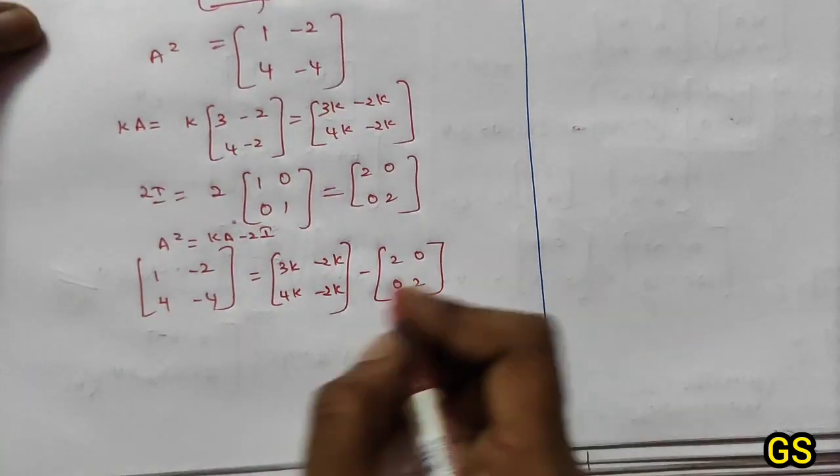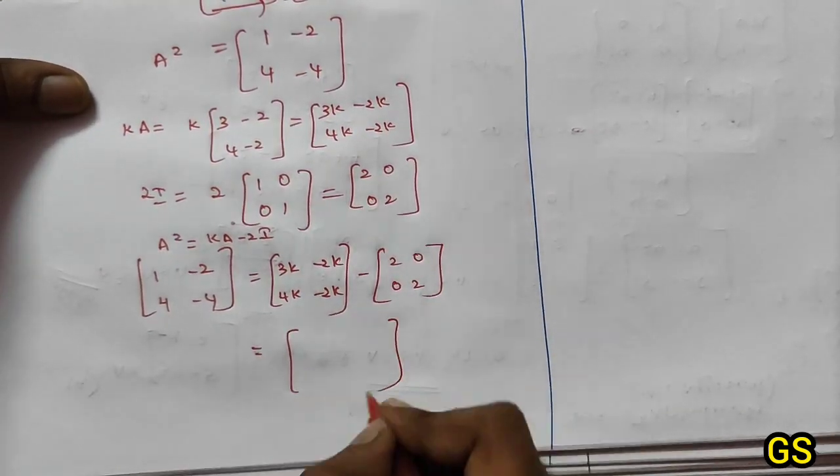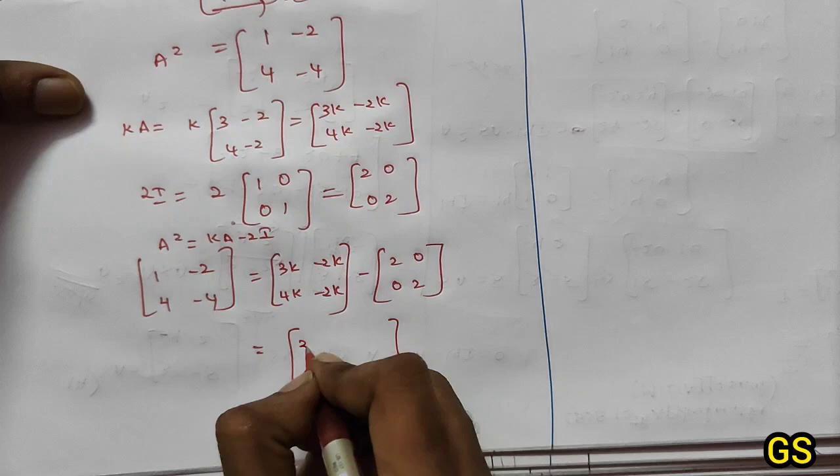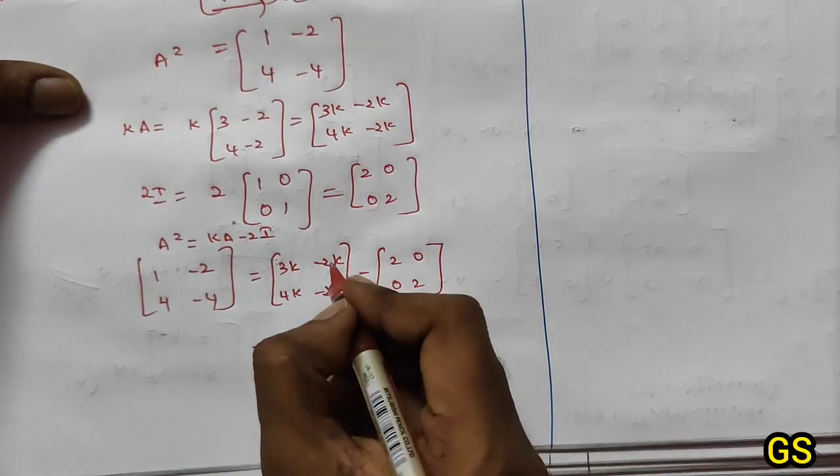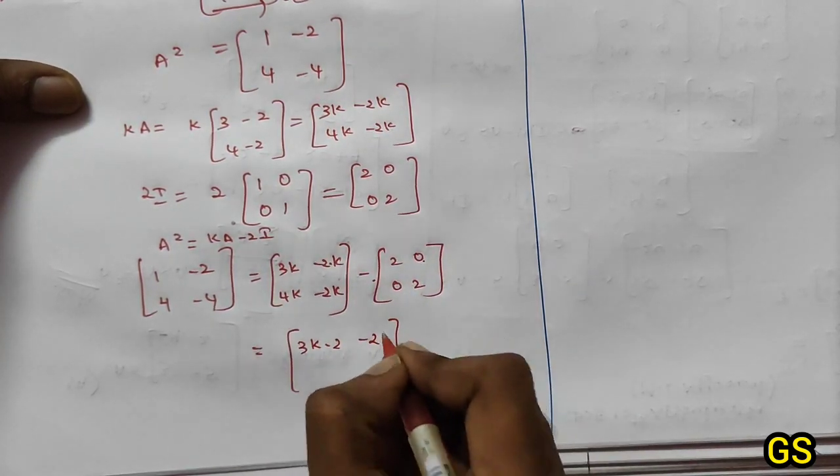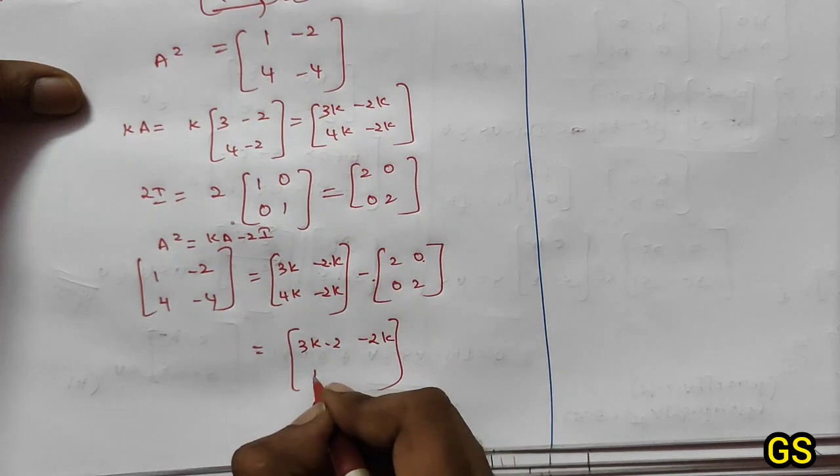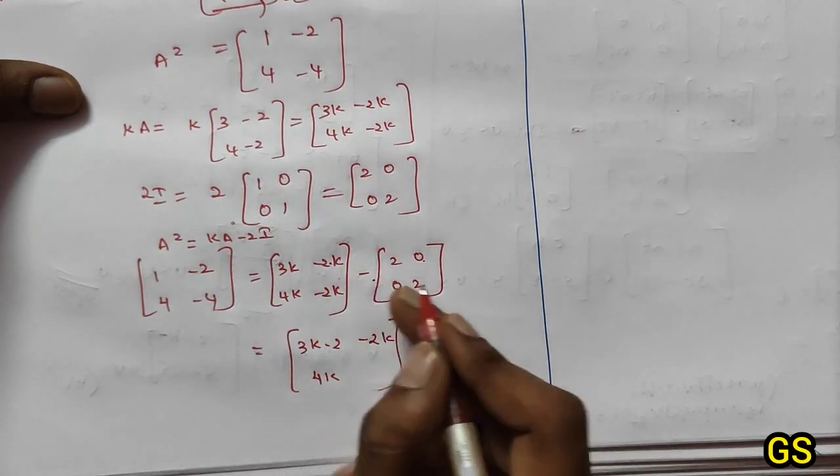Right side: 3k minus 2, next minus 2k minus 0, then 4k minus 0 equals 4k, minus 2k minus 2.